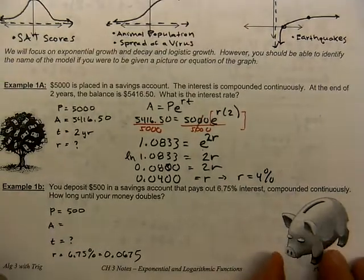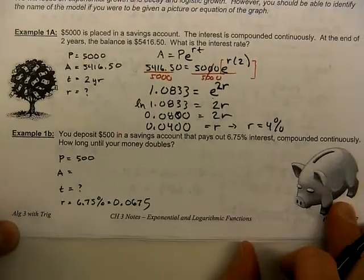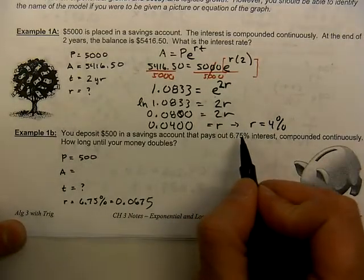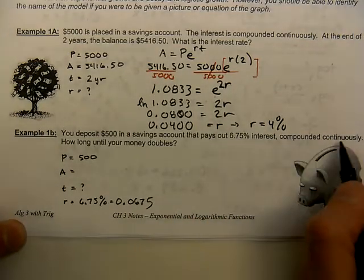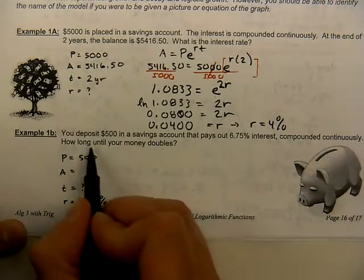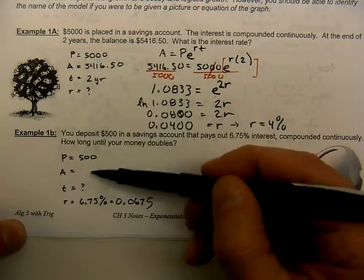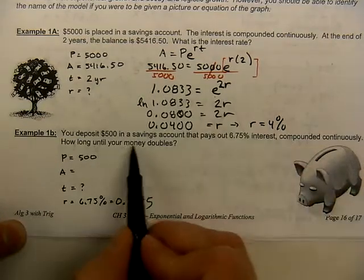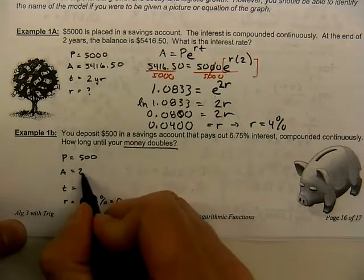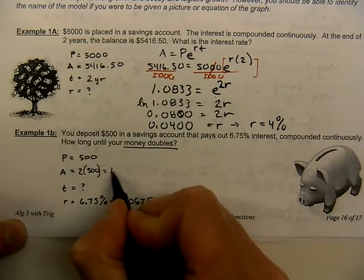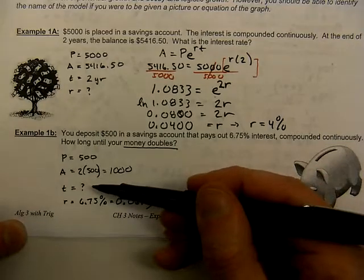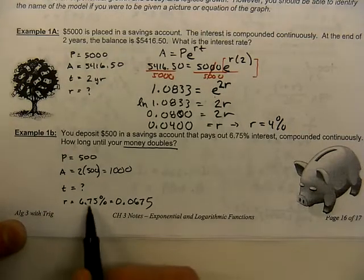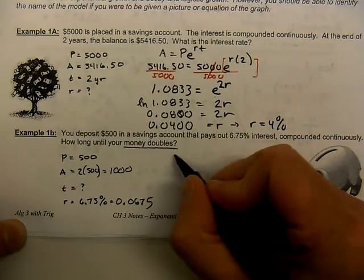Let's look at another variation on this. You are going to deposit $500 into the savings account. Now we know the interest rate. Again, we're using the same compounded continuously formula. And the question is, how long until your money doubles? Notice it appears as if we have two unknowns. We're starting with $500, but do we know the amount? Yes, we do. Here's the clue. Your money is going to double. So you need to double that $500. In other words, the amount is going to be $1,000. So you only have the variable of time.